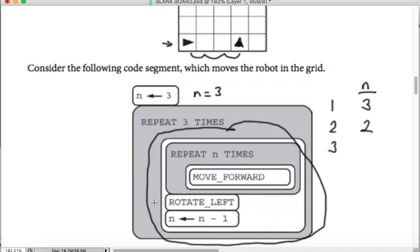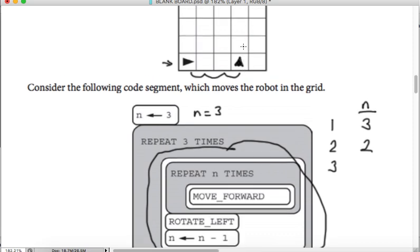We go up again because we have to repeat three times. We repeat n times, n is 2. Move forward twice: one, two, and then rotate left. So we are done with the second iteration.